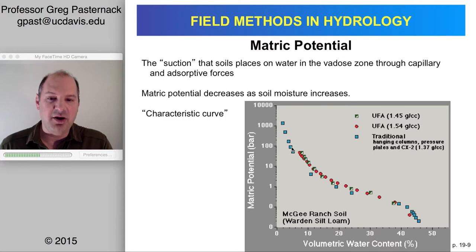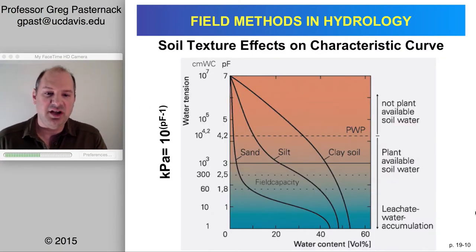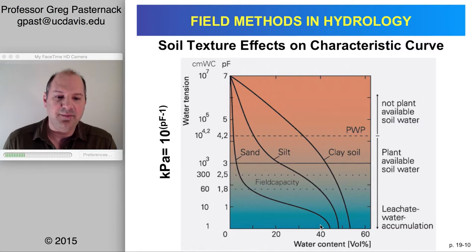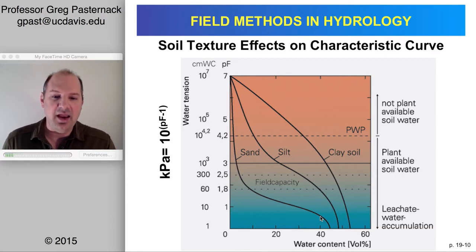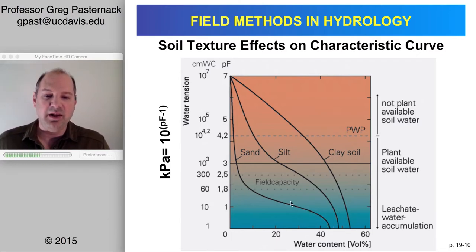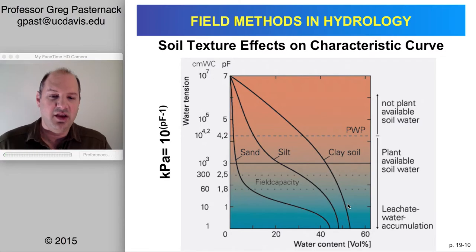This relationship — the shape of the curve — is what we call a characteristic curve, and it varies as a function of soil texture. For any given water content, a sandy soil has very little ability to hold onto it — very little capillary force. Silt has a higher matric potential, and clay has the highest for any given water content. The shapes also change: you can give up a lot of water in sand before pressure starts to increase, whereas for clay even a small decrease in water content causes a large change in matric potential.